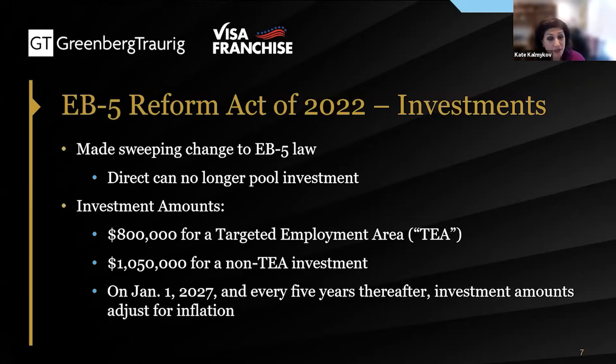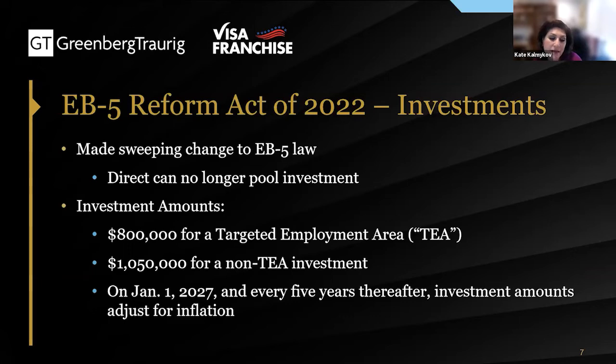We can no longer pool investments. The biggest change was the increase in the investment amount. When the program was introduced in 1990, you had to invest a million dollars, or 500,000 in a high unemployment area. The new law finally adjusted those prices. Now it's $800,000 for what we call a targeted employment area — defined as a high unemployment area at 150% of the national average — or a rural area. A non-TEA investment was raised by $50,000 to $1,050,000.